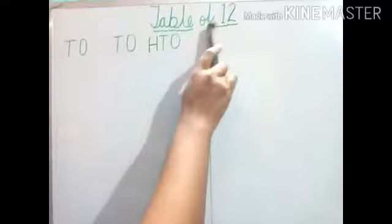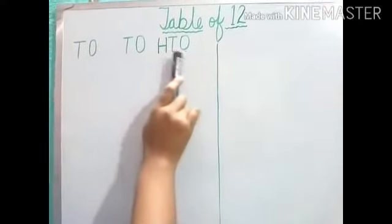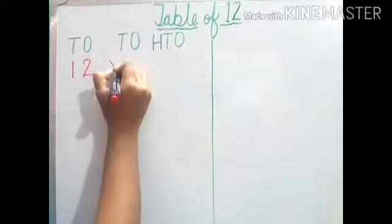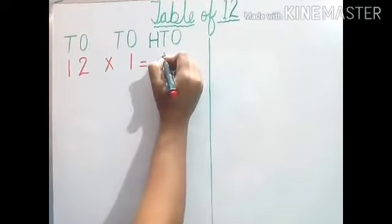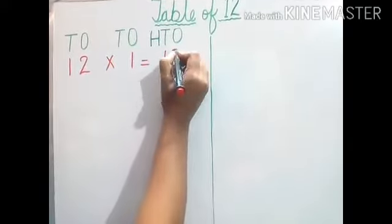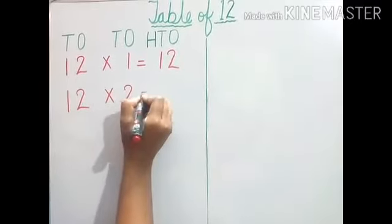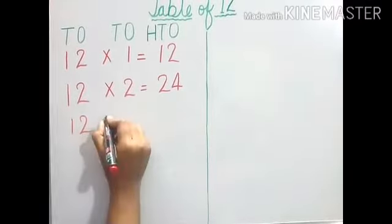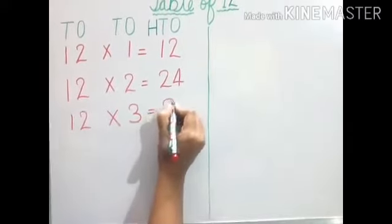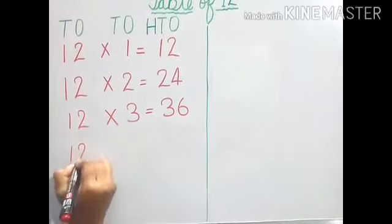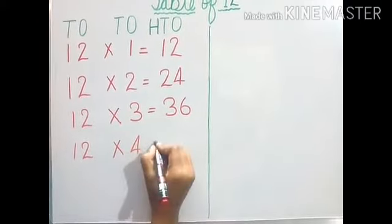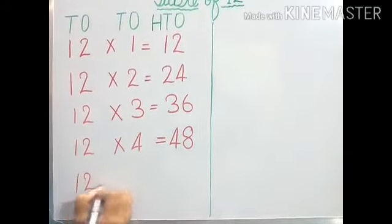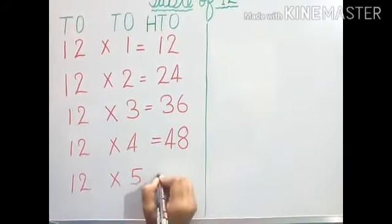Now the last table — table of 12. Again we will write all the places, and after that we will start. 12, 1s are 12. 12, 2s are 24. 12, 3s are 36. 12, 4s are 48. 12, 5s are 60.